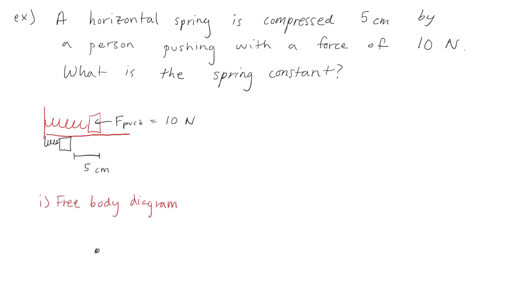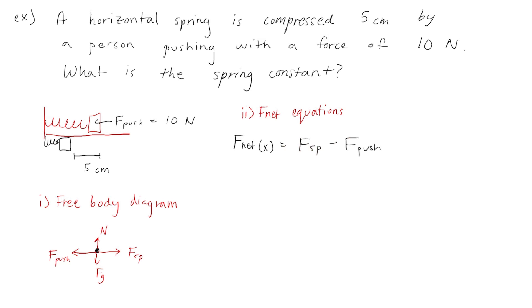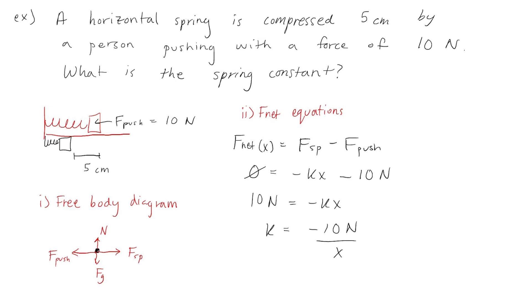The first thing I like to do is draw a free body diagram. We can see we have the pushing force, we have the spring force, and we have the force of gravity and the normal force. Next we will make an F net equation — specifically F net x, because we only care about the forces acting on the x-axis. So that would be the spring force minus the pushing force. We can replace F net x with zero because once the spring is compressed it's not moving. We can replace the force of the spring with negative kx, and we can replace the pushing force with 10 newtons. Then we rearrange this equation and isolate for the spring constant k, and we find that k is equal to negative 10 newtons divided by the displacement x.